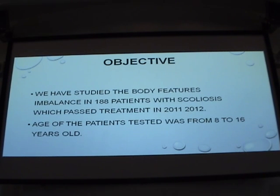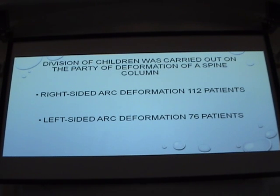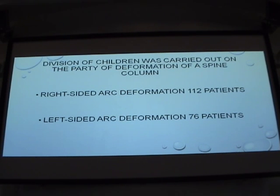As the objective, we studied body balance features in 188 patients with scoliosis who underwent treatment in 2011-2012. We selected children aged 8 to 16 years old with one-sided deformations. We had 112 patients with left-sided deformations and 76 with right-sided. We did not subdivide based on sex; only age and the side of spinal deformation were considered.